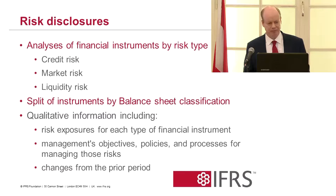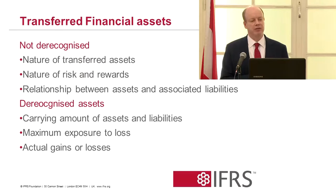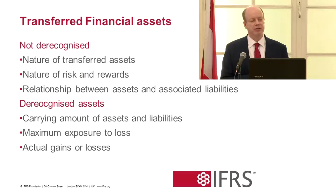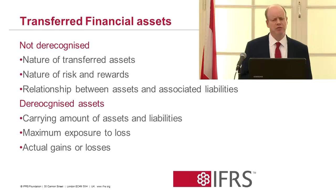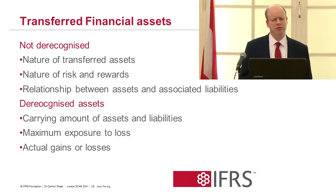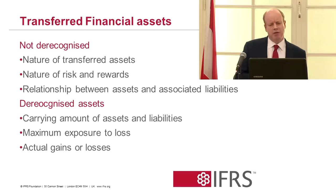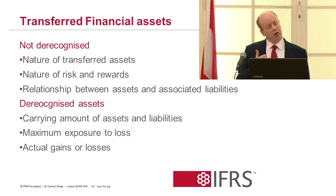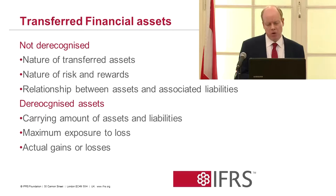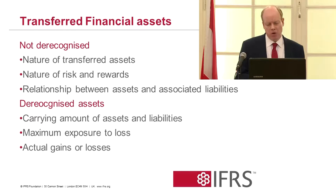IFRS 7 also requires entities to provide disclosures in relation to transferred financial assets and de-recognition. When you de-recognise an asset, it comes off the balance sheet. For assets which are not de-recognised, IFRS 7 asks for disclosures about the nature of those assets, the nature of the risks and rewards, and the relationship between the assets and any associated liabilities. For de-recognised assets, there are also disclosure requirements relating to carrying amounts, maximum exposure to losses, and any actual gains or losses on de-recognition.